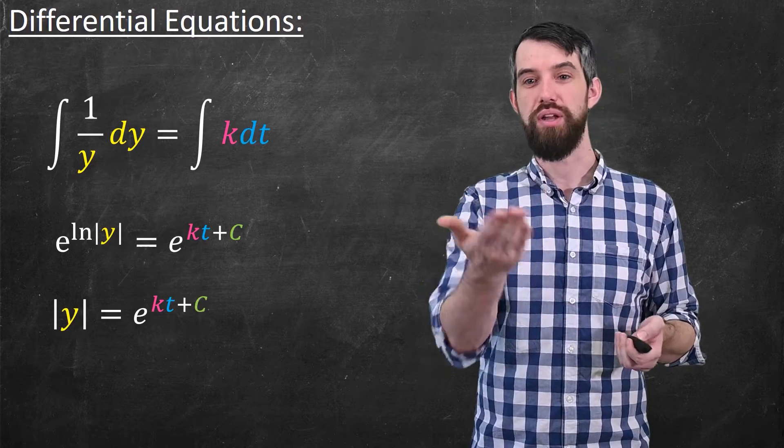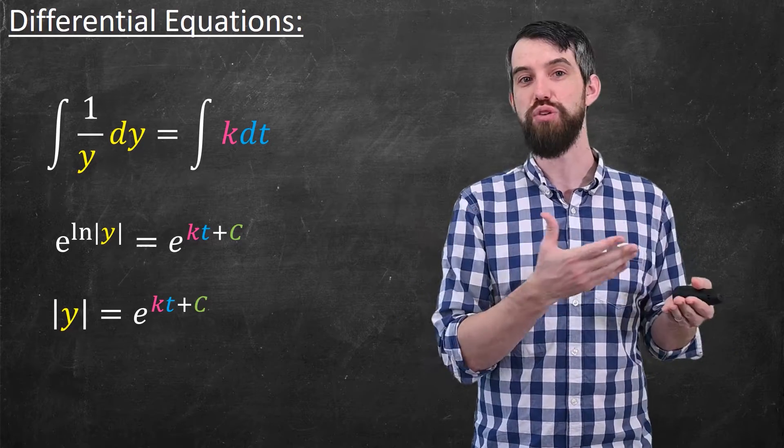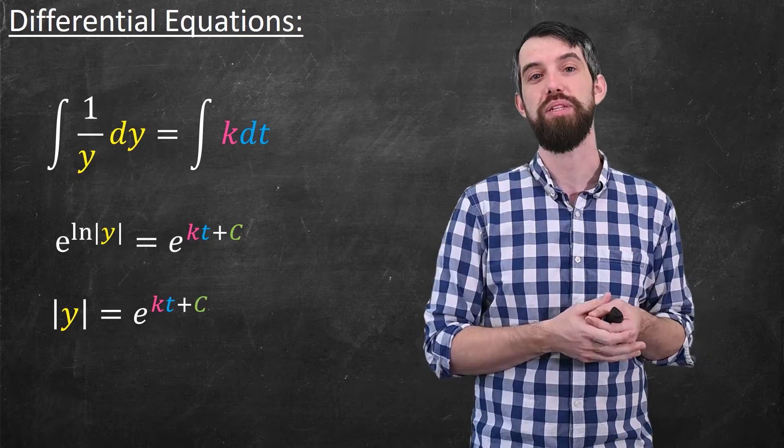On the left, this is just going to cancel out and be the absolute value of y, and on the right, well, e to the kt plus c.